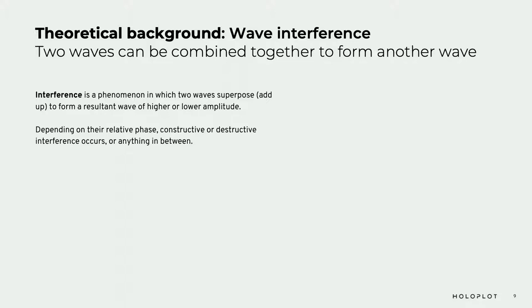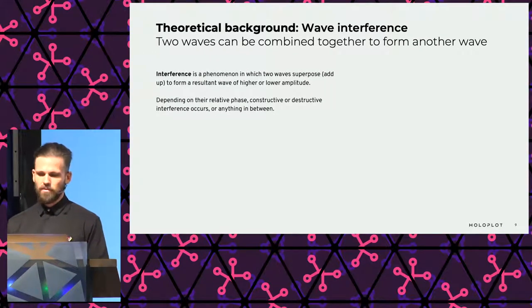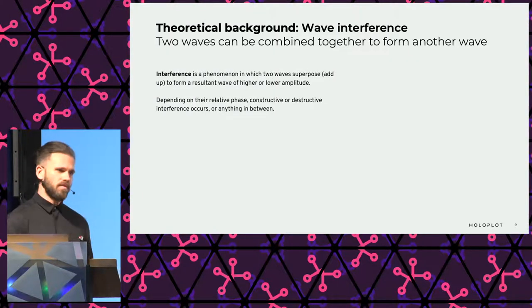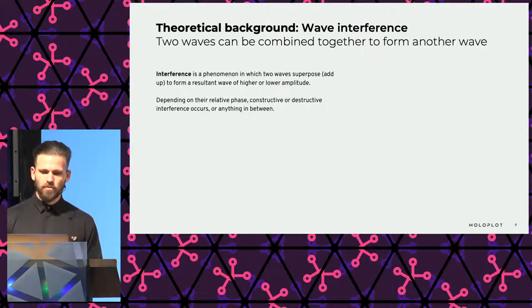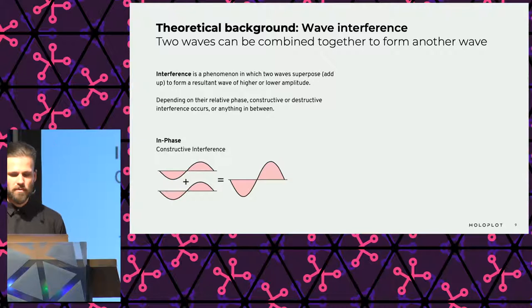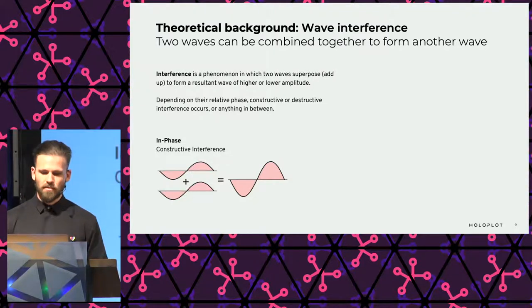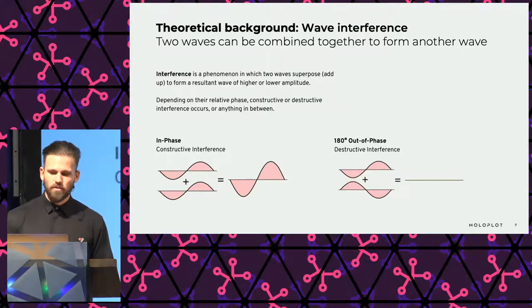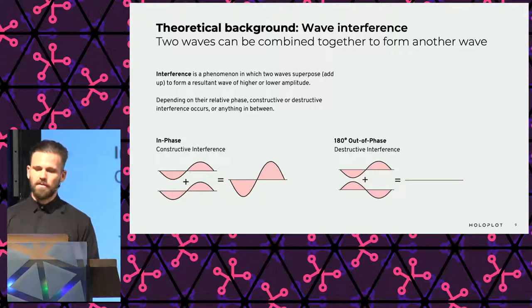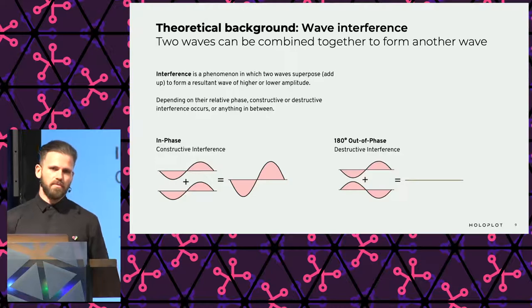Now that we know how a loudspeaker radiates sound at different frequencies, let's look at the interference of two sound waves when they overlap. Interference is a phenomenon where two waves overlap and form another wave with either higher or lower amplitude. Two waves of the same amplitude and frequency that are in phase interfere constructively, resulting in a wave of double amplitude — constructive interference. When two waves are 180 degrees out of phase, they cancel each other completely, producing silence — destructive interference.